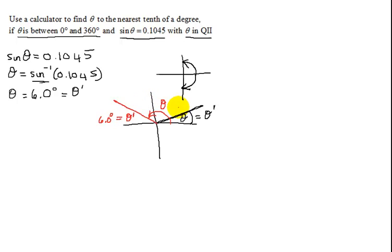Because, remember, in quadrant 1 and in quadrant 2, the sine of theta is going to be positive. So, this is my second angle that I'm looking for.